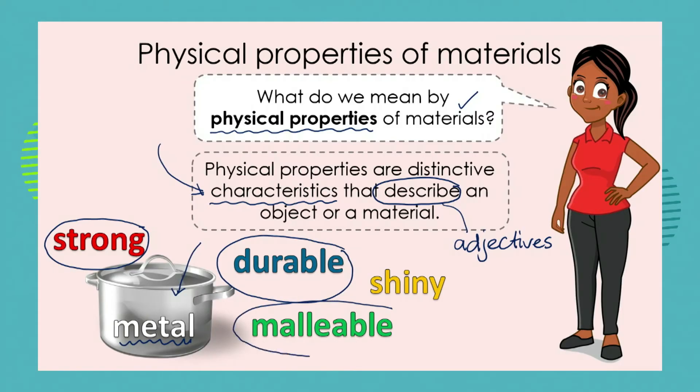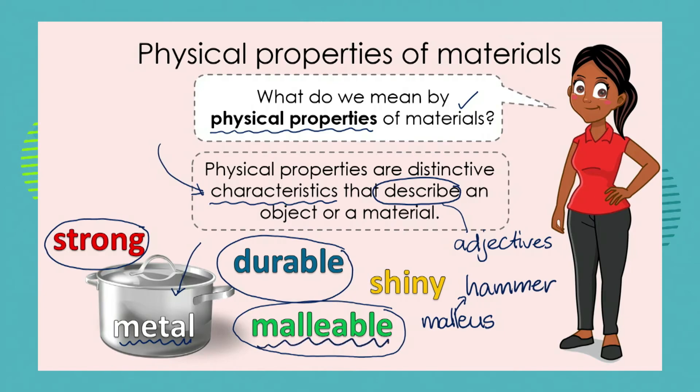Let's pick another distinctive characteristic of the metal pot: malleable. Malleable sounds like a tricky word, but it comes from the Latin word 'malleous', which means hammer. A property of a substance that is malleable means we could take a hammer and beat that material to make thin sheets of metal. Think about your car doors and panels — they're also metal that has been beaten to make it quite thin. So that's another property of our metal pot.